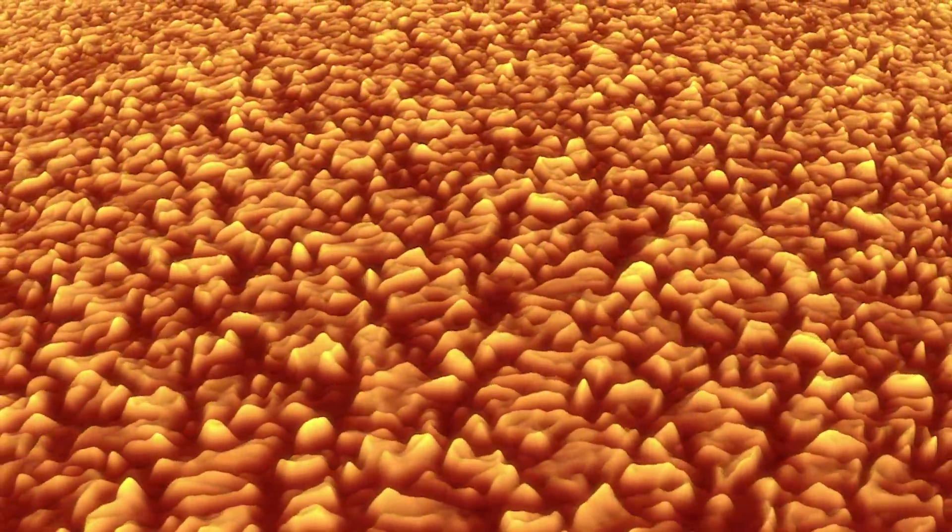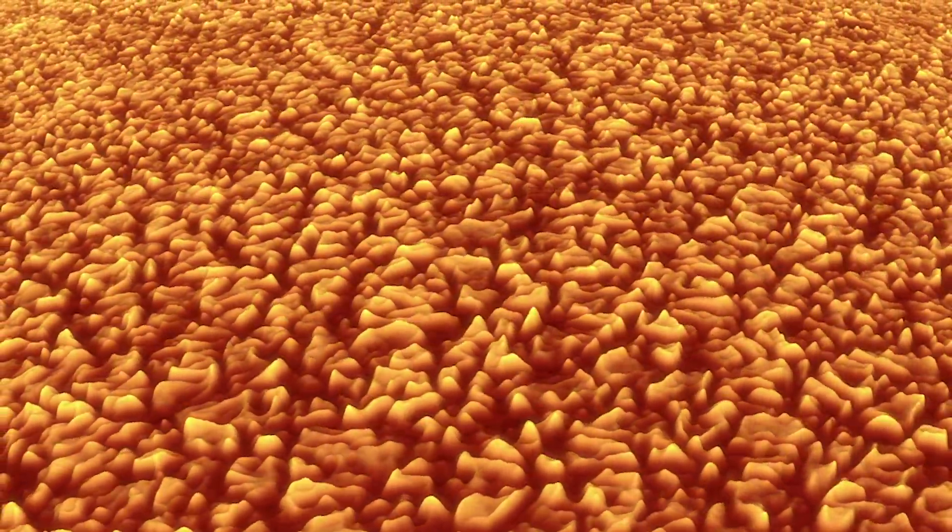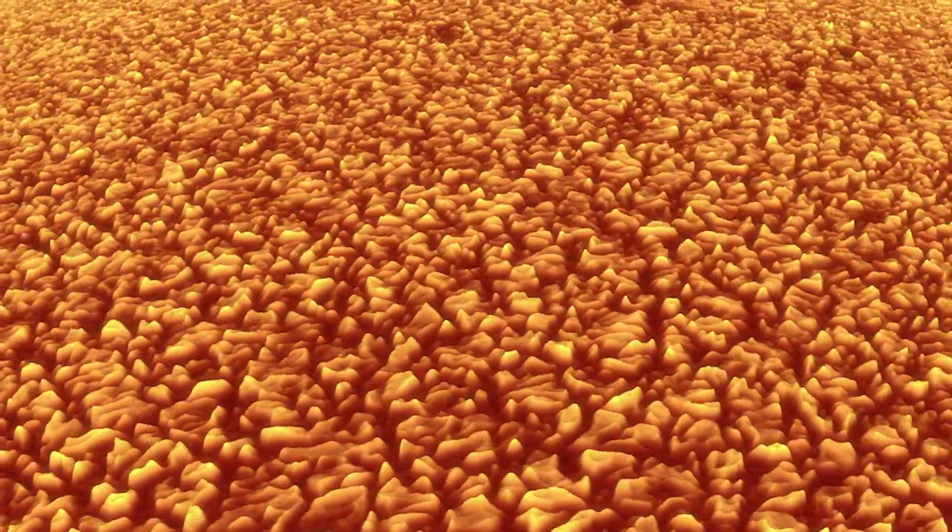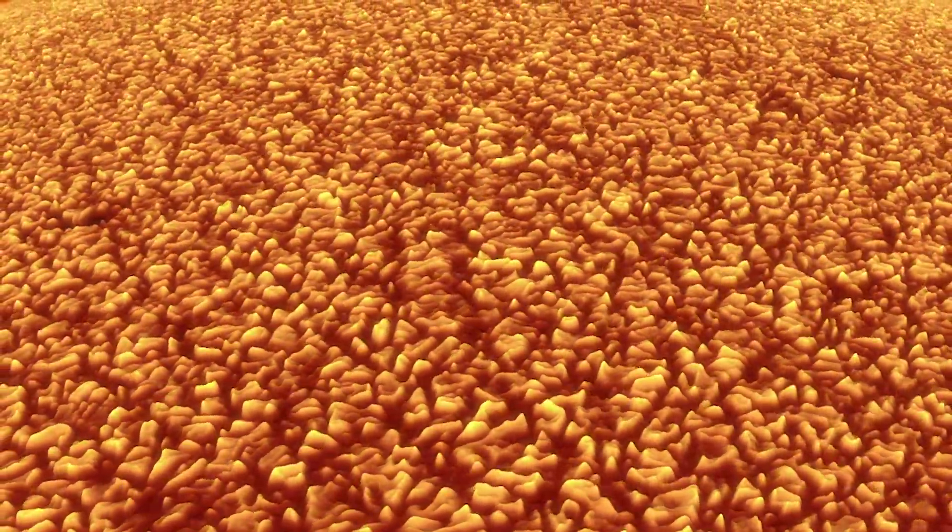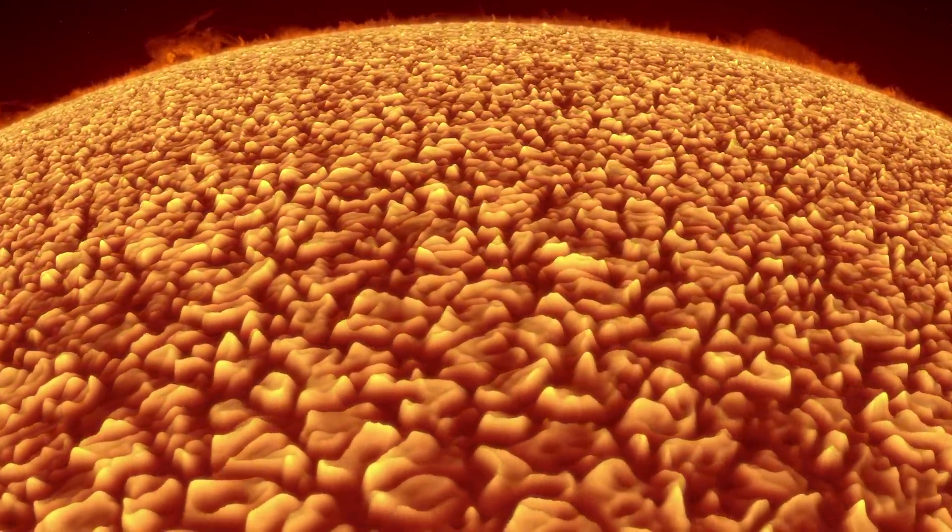The bright regions are where it's hot, and the dark lanes around them are where that gas has cooled off and starts being pulled back down by gravity and goes back down into the interior of the sun.